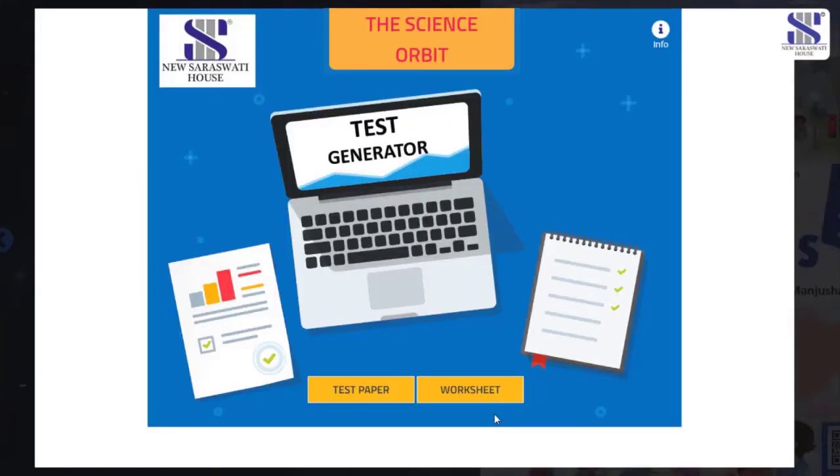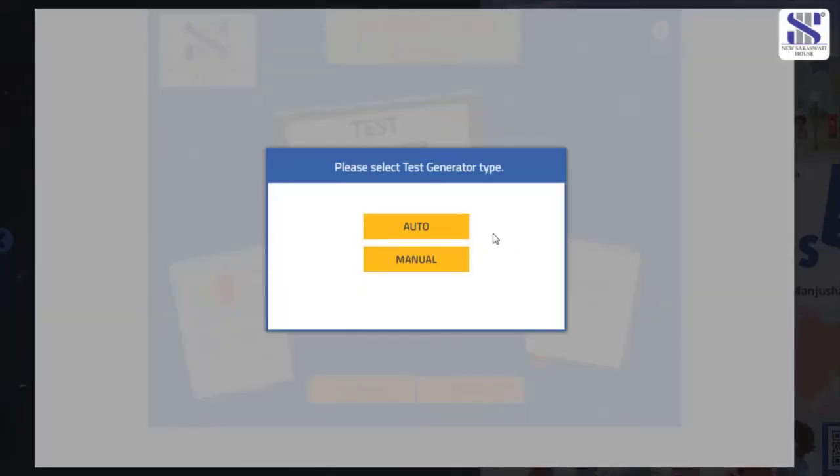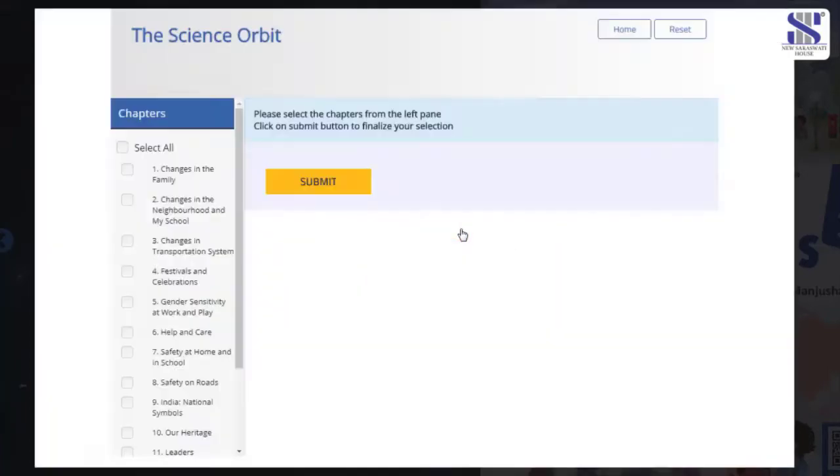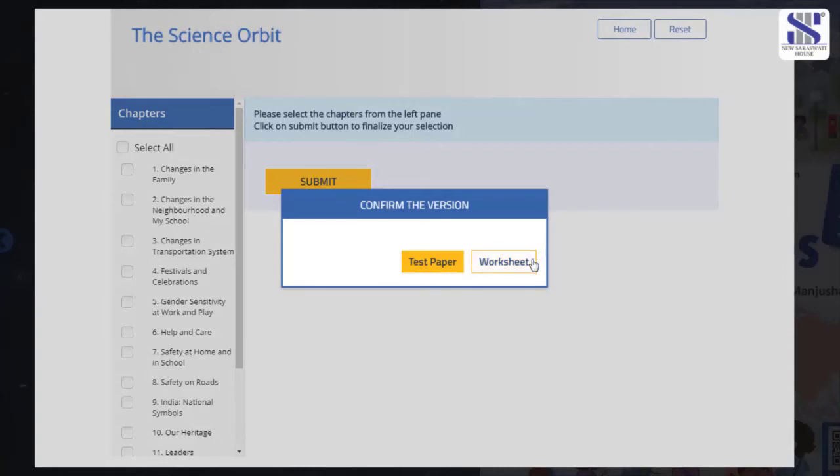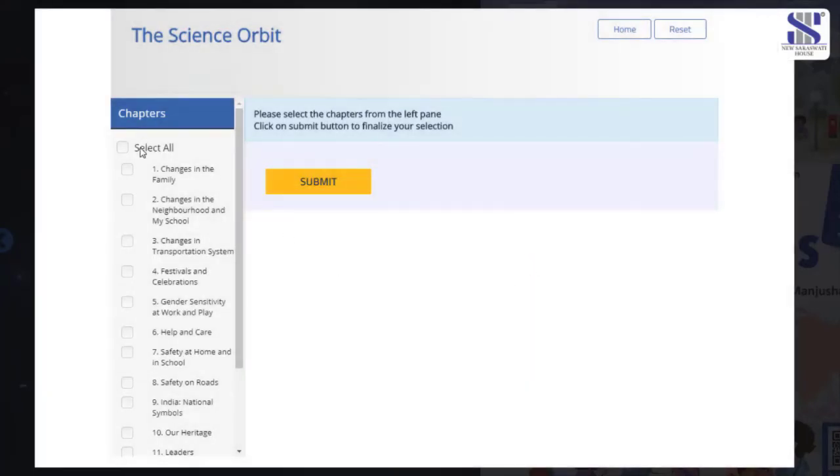In order to create test papers or worksheets in auto mode, click on the test papers or worksheet button followed by the auto mode button. Choose the lessons.